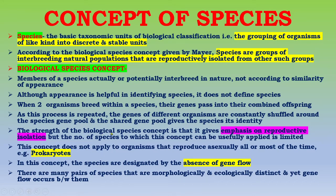The strength of this concept given by Mayr — the biological species concept — is that it gives emphasis on reproductive isolation. However, the number of species to which this concept can be usefully applied is limited. This concept does not apply to organisms that reproduce asexually all or most of the time, for example prokaryotes. In this concept, species are designated by the absence of gene flow.